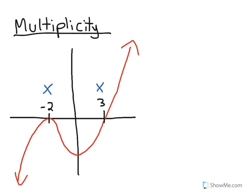The multiplicity of these roots is slightly different. We can see that the root at where x is minus 2, it bounces off the x-axis.